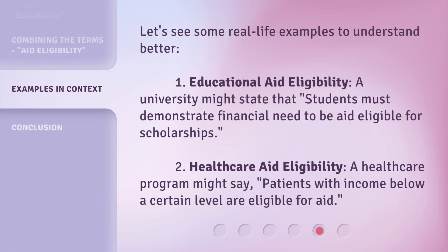Let's see some real-life examples to understand better. First, educational aid eligibility: a university might state that students must demonstrate financial need to be aid eligible for scholarships. Second, health care aid eligibility: a health care program might say that patients with income below a certain level are eligible for aid.